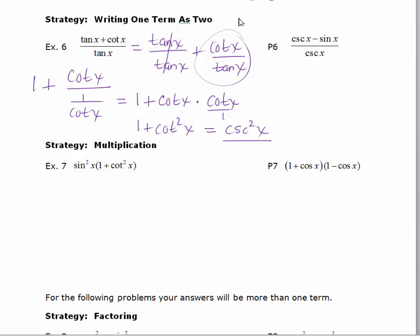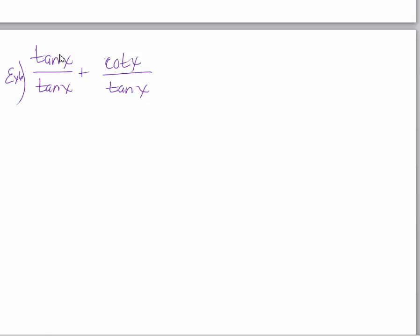So we're still going to write this as two terms but it's the cotan over the tan that we're going to do a little bit differently. So just as before we wrote it as two terms. The tan x over the tan x is 1. I'm going to rewrite these using sines and cosines. So the numerator is cosine x over sine x. The denominator is sine x over cosine x.